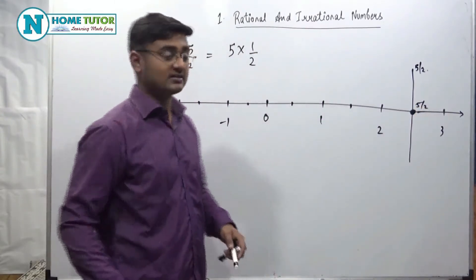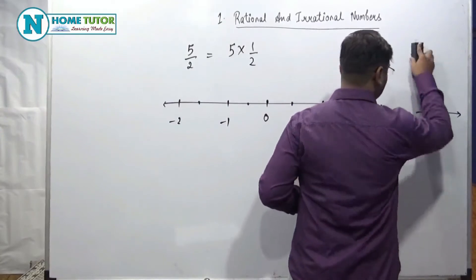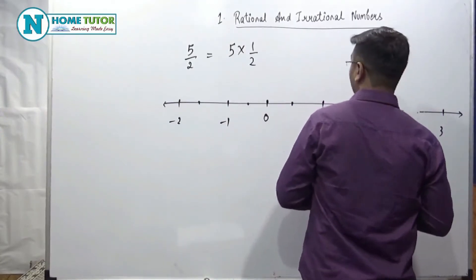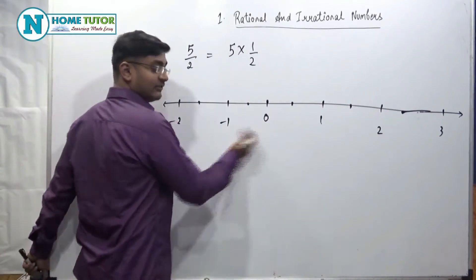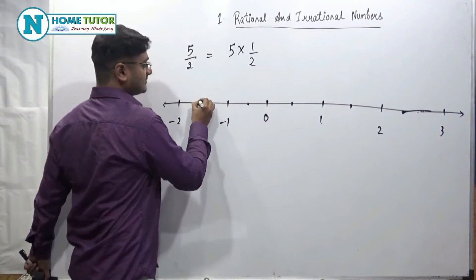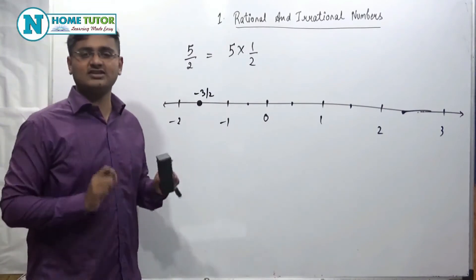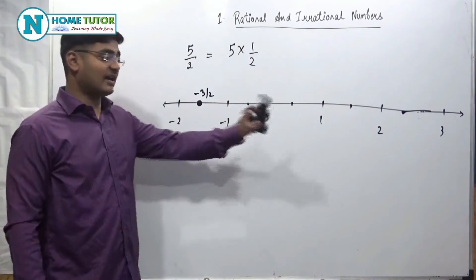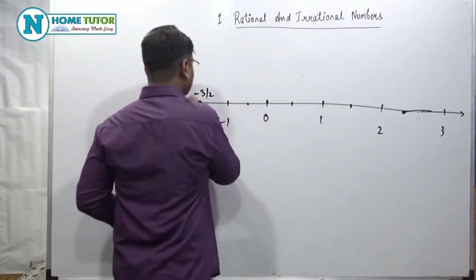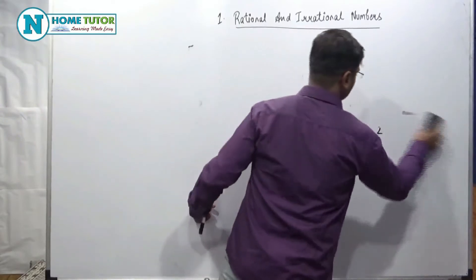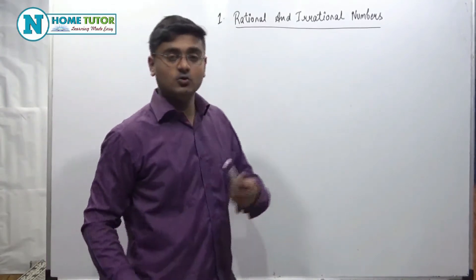Next, we will find minus 3 by 2. We plot it in the negative direction. The rest remains the same — it is the 3rd point in the negative direction. If the number is negative, the same procedure is followed; the only difference is which direction we count and which point we plot.